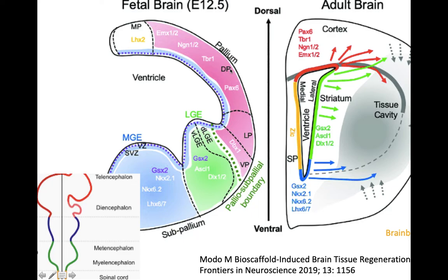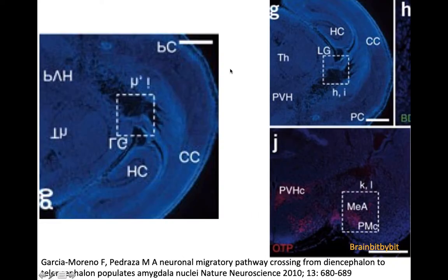Even more interesting is that there are also diencephalic cells in the amygdala. It is important for cells to migrate tangentially, because this creates greater phenotypical variation — the cells have been exposed to different molecular environments and therefore undergo different differentiation.